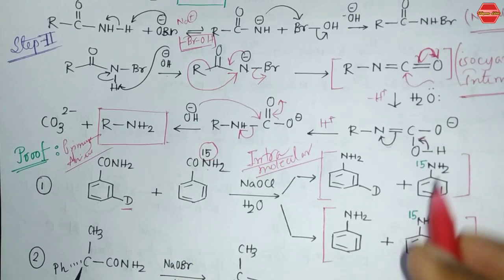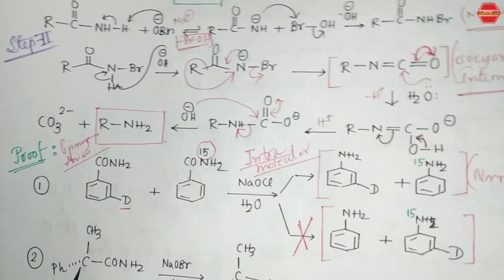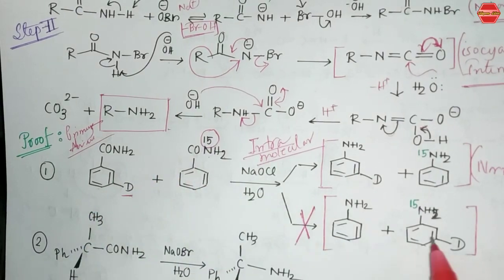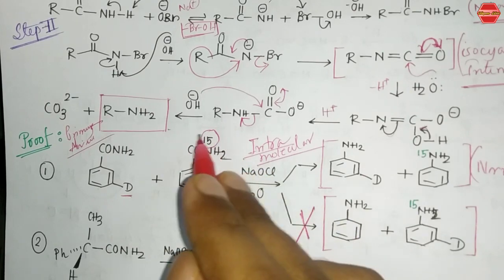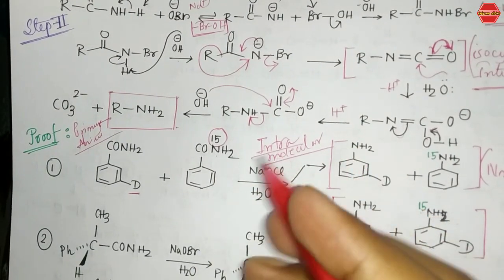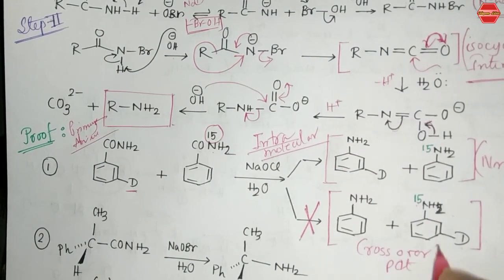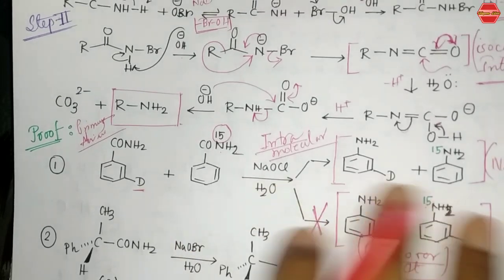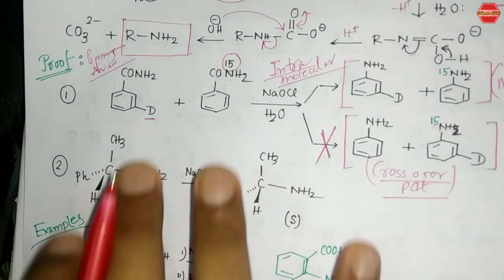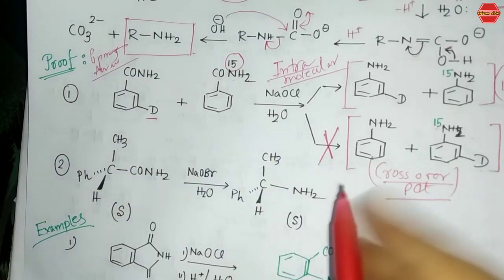This is the normal product. The crossover product cannot be obtained — you don't get a product where deuterium migrates to the ¹⁵N-labeled molecule. Since only the normal product is observed and the crossover product is not, this confirms the reaction is intramolecular. Another important proof is the retention of configuration.